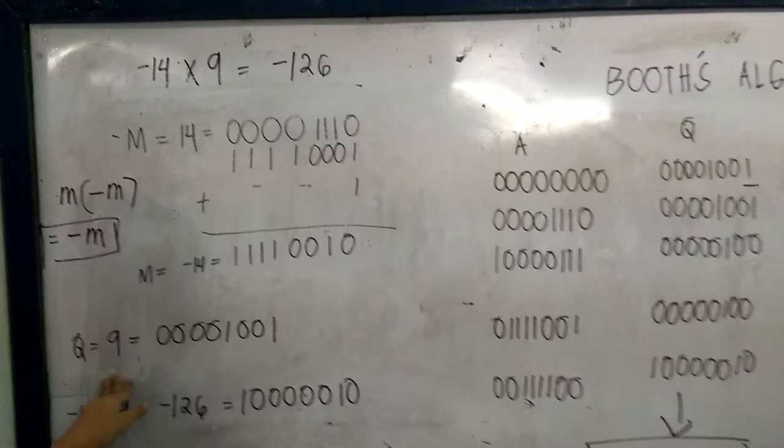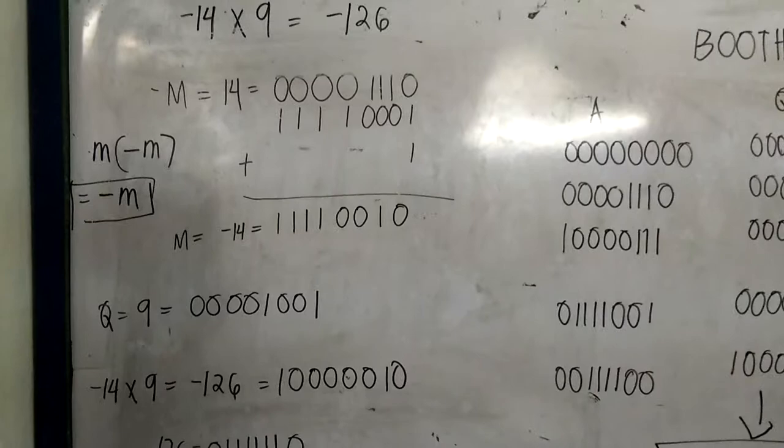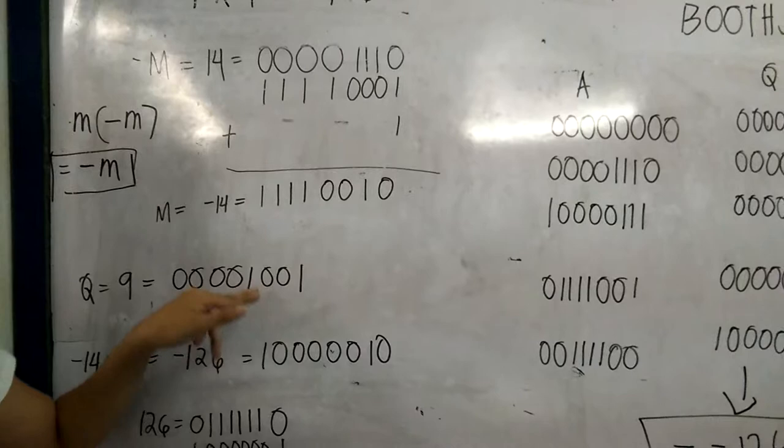Next, we have to get positive 9 into binary equivalent. Since it is already positive, there is no negation needed. The value of 9 will be 0000 1001.